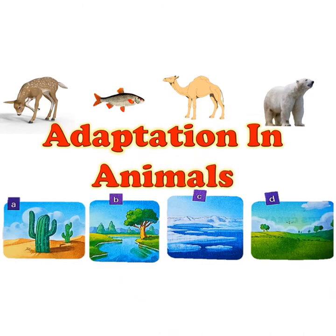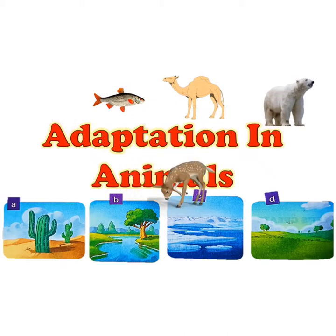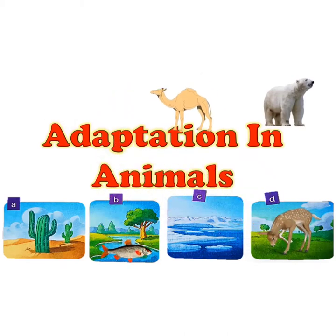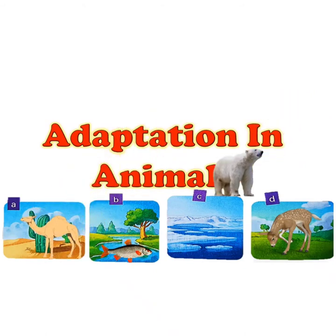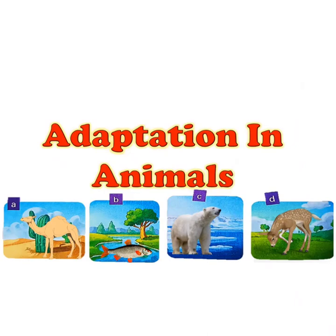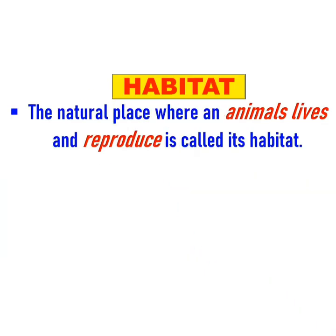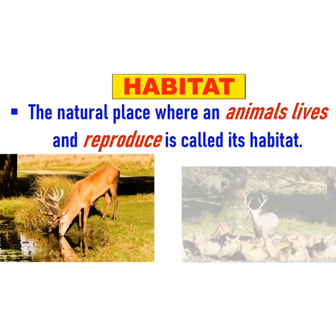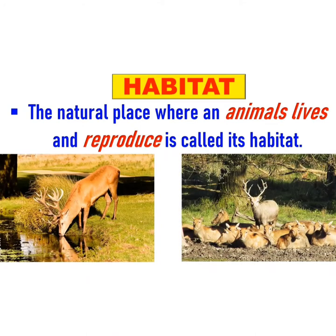Dear children, like plants, animals are also found all over the world. Some animals live on land, some animals live in water, some live in hot desert, and some others live in cold polar regions. The natural place where an animal lives and reproduces is called its habitat, and every organism has a unique habitat.